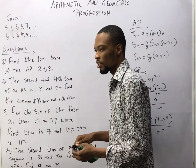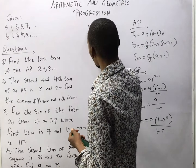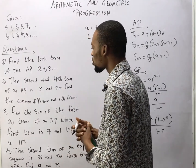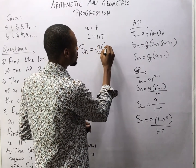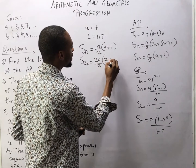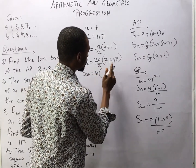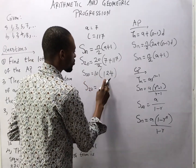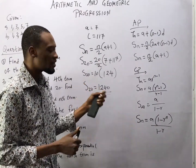The third question says: find the sum of the first 20 terms of an AP whose first term A is 7 and last term L is 117. When given the last term, the formula is Sn = n/2 × (A + L). So S20 = 20/2 × (7 + 117) = 10 × 124 = 1240. So the sum of the first 20 terms is 1240.